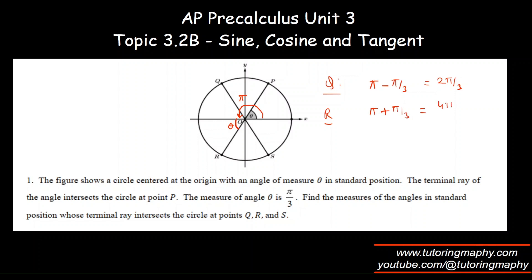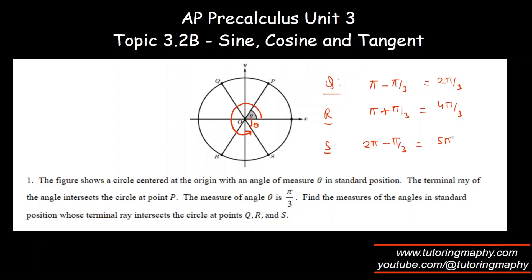For R the answer is π + π/3 which is 4π/3. Likewise, can we agree that this is also theta? What is this complete angle — isn't that 2π? So if from 2π I take away theta, I'll be left with the terminal angle of S. So for S the answer will be 2π minus π/3 which is 5π/3. That is the final answer.